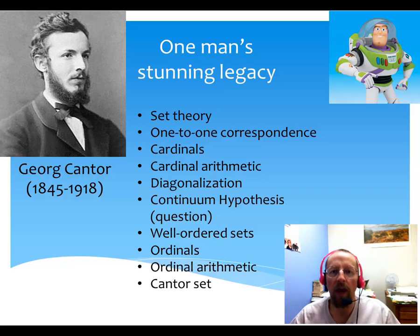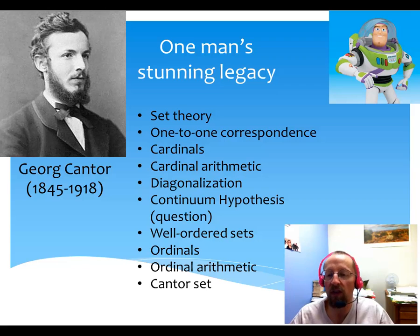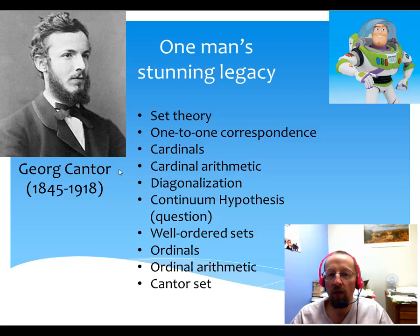Let me close by looking at two things: a tiny bit of history, and focusing on the legacy of Cantor. I want to close with one famous application of essentially a diagonal idea that gets at how weird set theory can be. I put together a list of all the things that come from Cantor. He really almost came up with a lot of it almost entirely on his own, which is quite unusual.